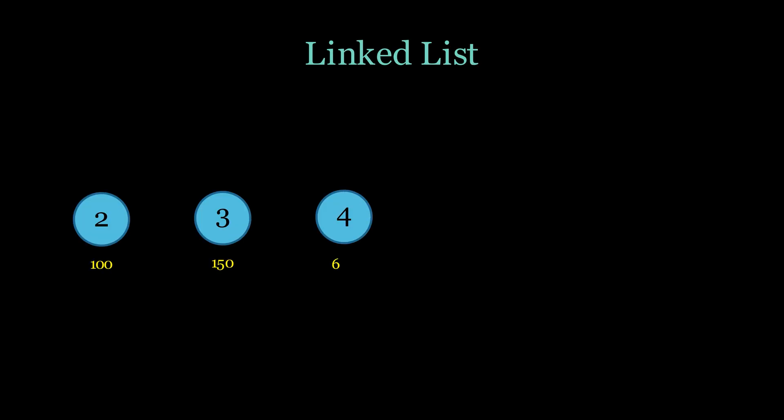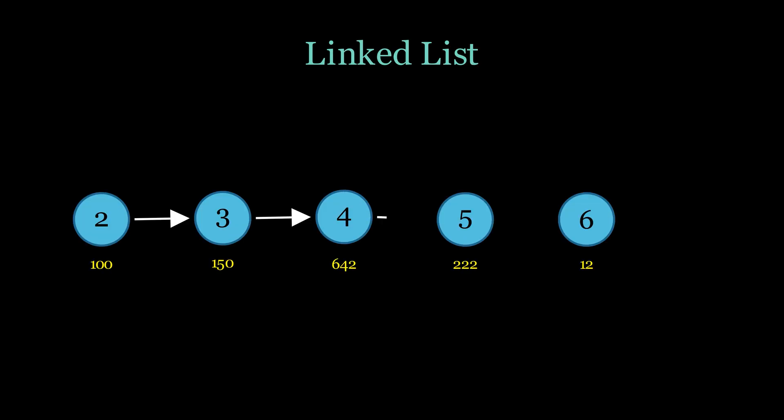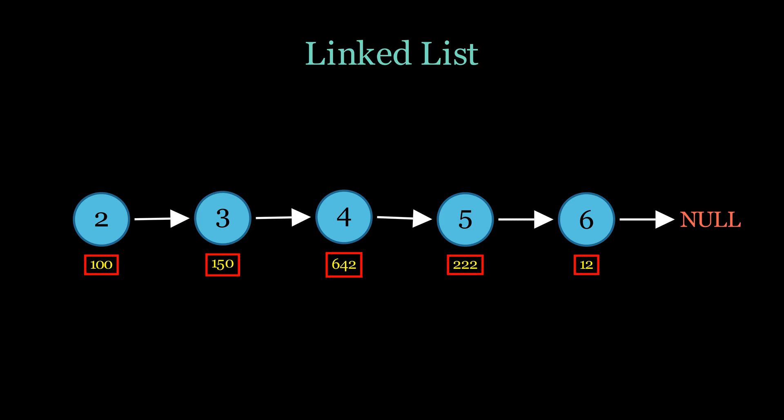A linked list is a linear data structure where elements are connected to each other using pointers or links. In this illustration, the blue circles represent nodes of the list, the arrows represent pointers, and the yellow texts represent memory addresses of those nodes.